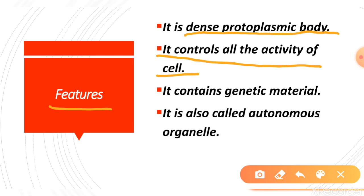The nucleus contains genetic material. It has a chromosome structure — in the starting phase it is a network structure called chromatin network, and when the time of cell division comes, it converts into a dense form and becomes the chromosome, which carries the genetic material.